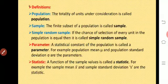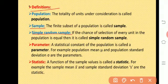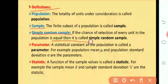Today we will start with some definitions. The first definition is population. The totality of units under consideration is called population. We are going to consider not just the human population, but any living or non-living things as a population. The next definition is sample: a finite subset of a population is called a sample. The next definition is simple random sample: if the chance of selection of every unit in the population is equal, then it is called a simple random sample.